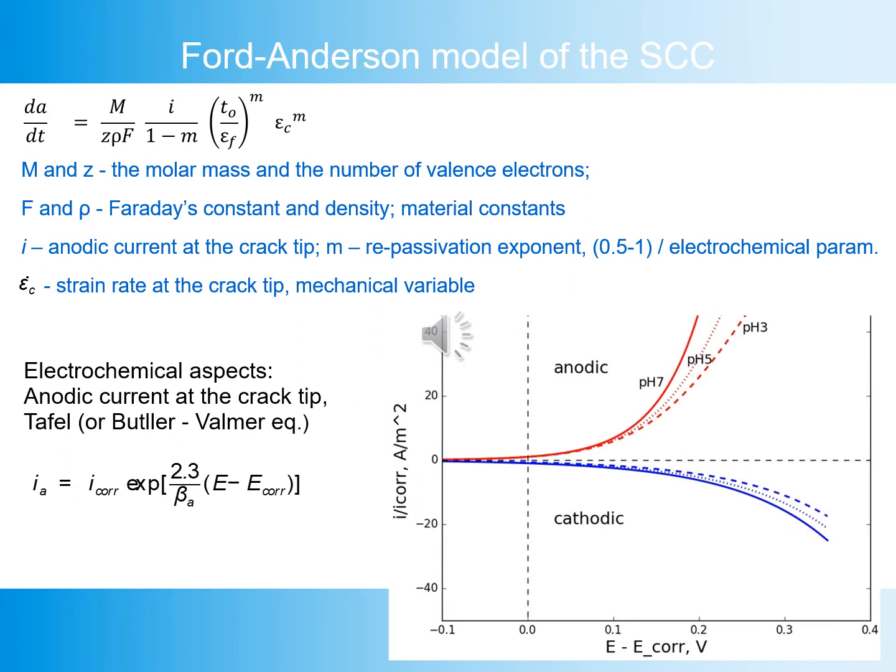The Ford-Anderson model defines crack growth rate by an equation involving material parameters — molar mass (M), number of valence electrons (z), Faraday's constant (F), and density (ρ) — as well as electrochemical parameters such as anodic current at the crack tip and repassivation exponent (m), and finally a mechanical variable: strain rate at the crack tip.